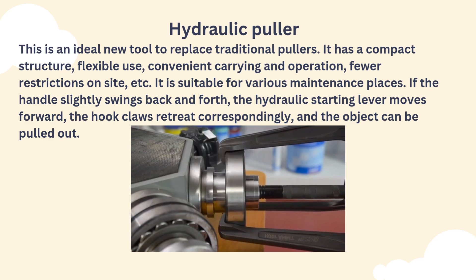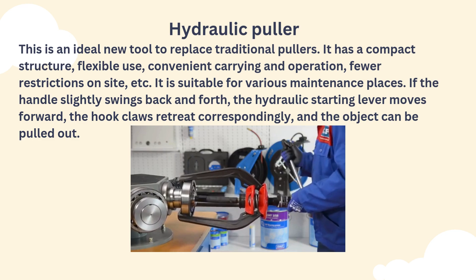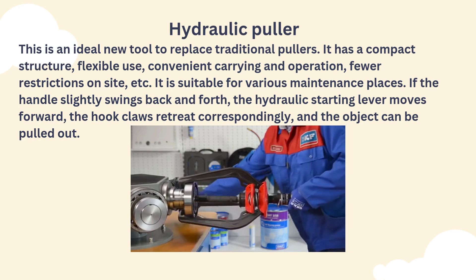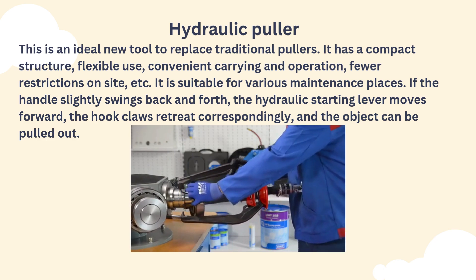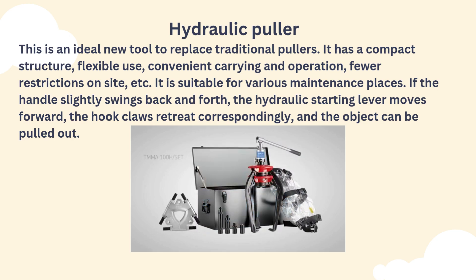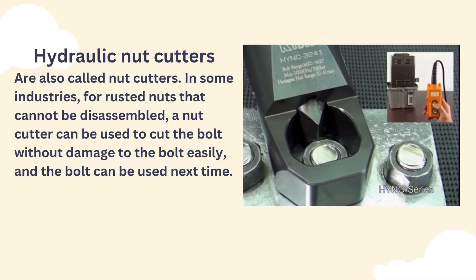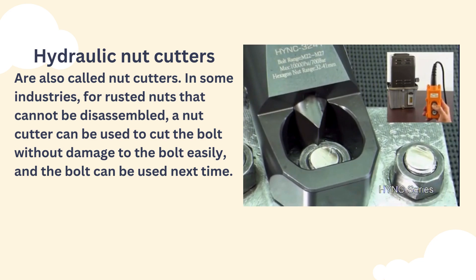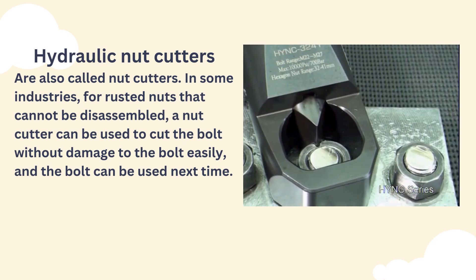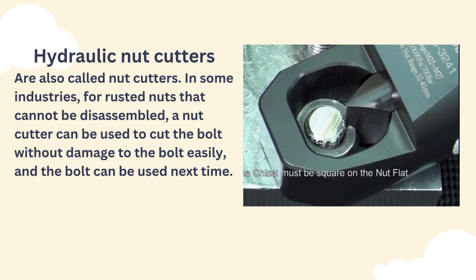If the handle slightly swings back and forth, the hydraulic starting lever moves forward, the hook claws retreat correspondingly, and the object can be pulled out. Hydraulic Nut Cutters, also called nut cutters: in some industries, for rusted nuts that cannot be disassembled, a nut cutter can be used to cut the bolt without damage to the bolt, and the bolt can be used next time.